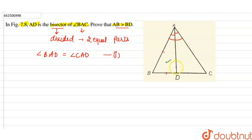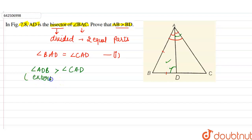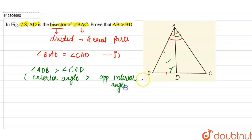In triangle ABD, angle ADB is greater than angle CAD. The reason is that angle ADB is an exterior angle. We know that the exterior angle of a triangle is greater than each of the opposite interior angles. Therefore, angle ADB is greater than angle CAD.